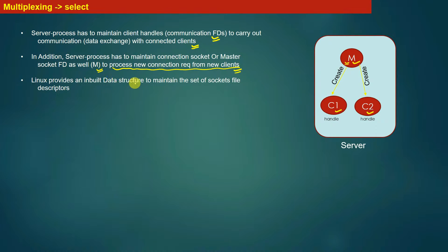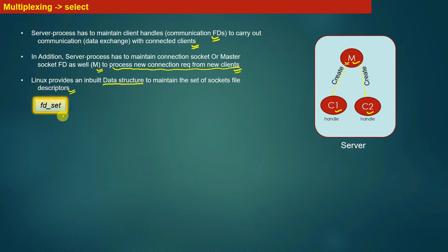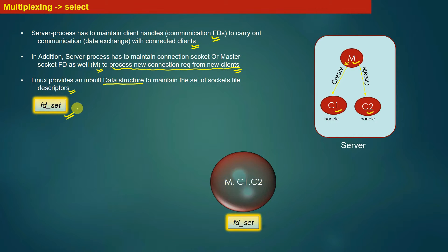Linux provides a built-in data structure to maintain the set of socket file descriptors. At this point the server is maintaining three file descriptors — the master socket file descriptor and two communication file descriptors. Linux provides a built-in data structure that makes maintaining socket file descriptors easy. That data structure is called fd_set, the file descriptor set, a standard data structure provided by the C API. fd_set is a set of file descriptors maintained by the server at any point in time.